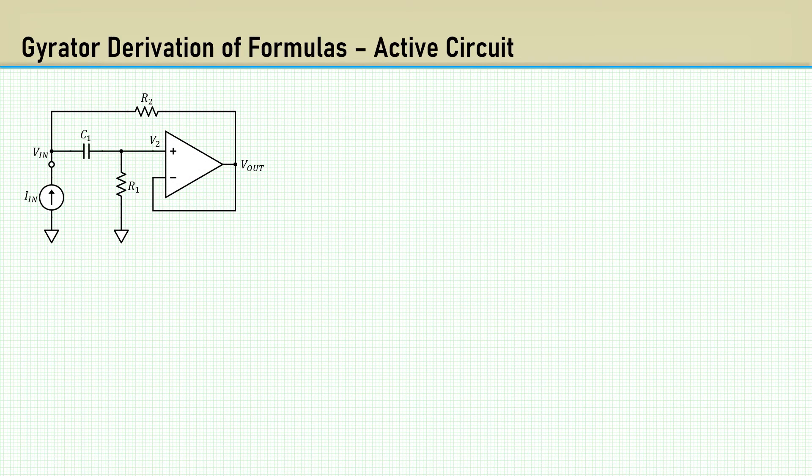Moving on now to the active circuit. Since the op amp is configured for unity gain, V2 equals Vout, which is the voltage divider of R1 and C1. Then multiply the top and bottom by SC1 to get rid of the fraction in the denominator. Again, we want to manipulate it into this form.